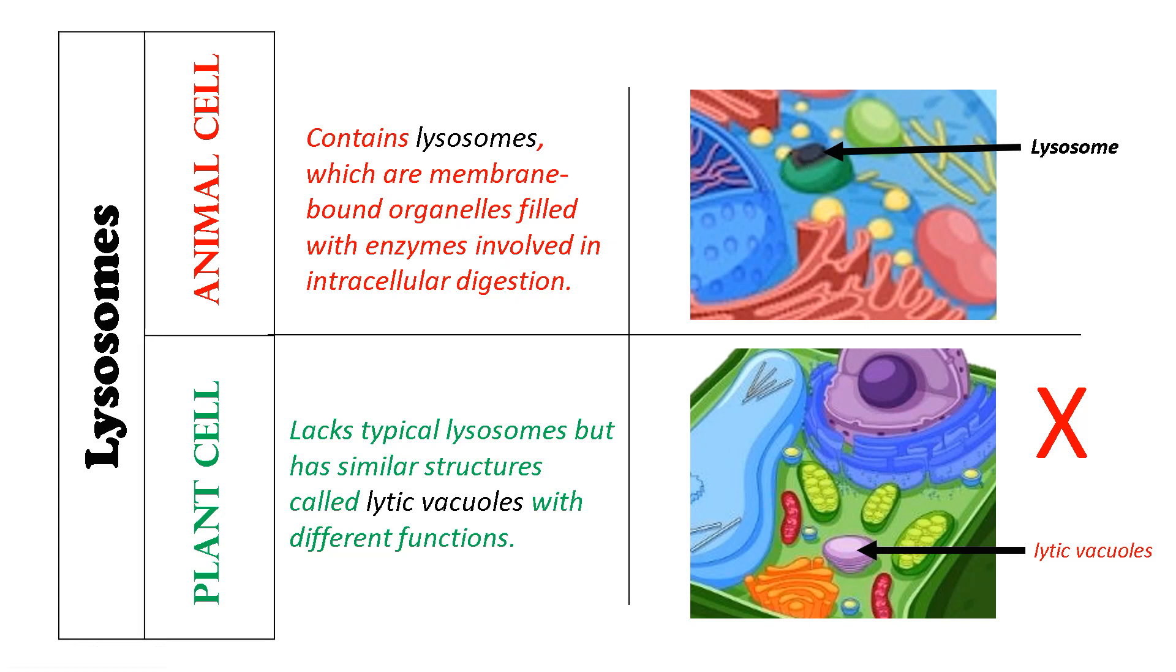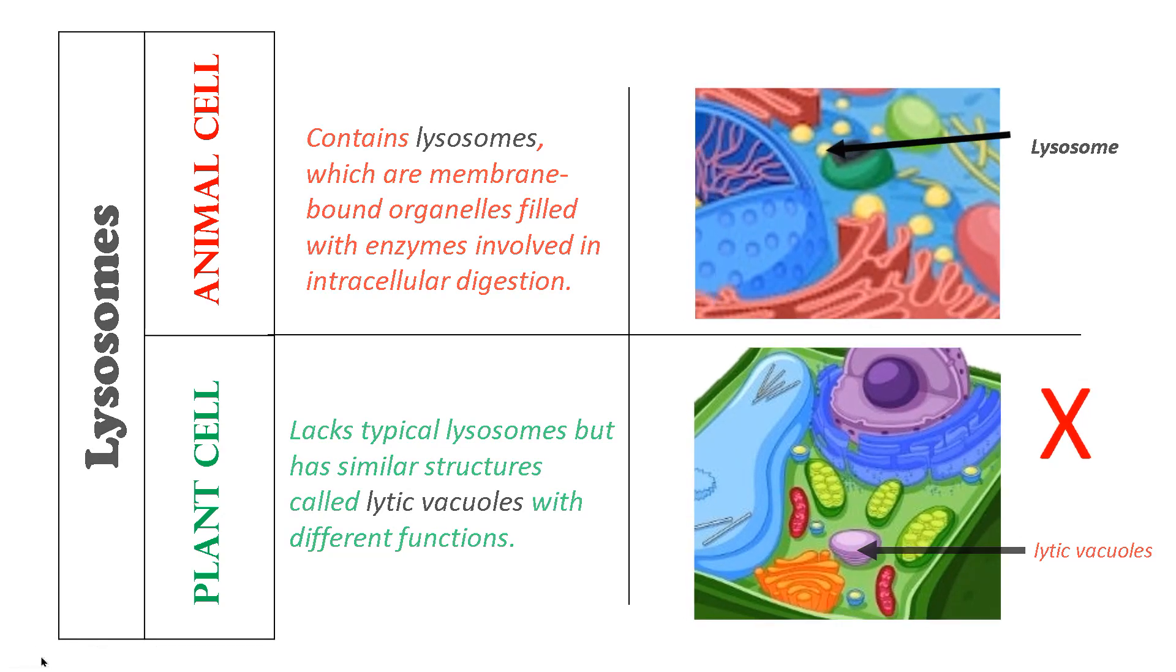But in case of plant cells, typical lysosome-like structures are not there, but structures similar to it called lytic vacuoles are present and they have a different sort of function there.